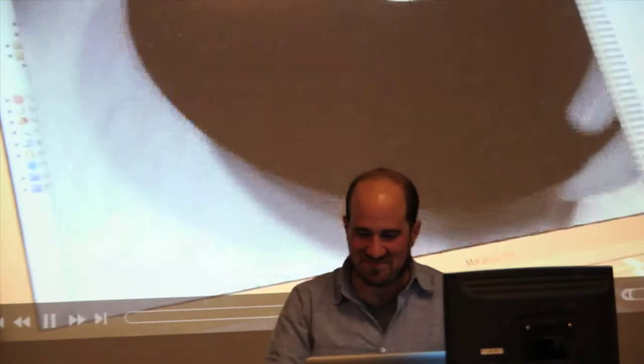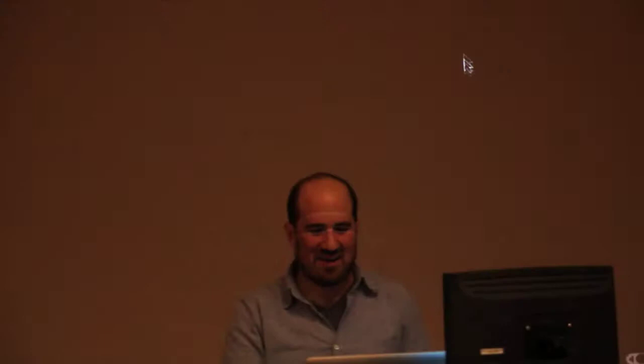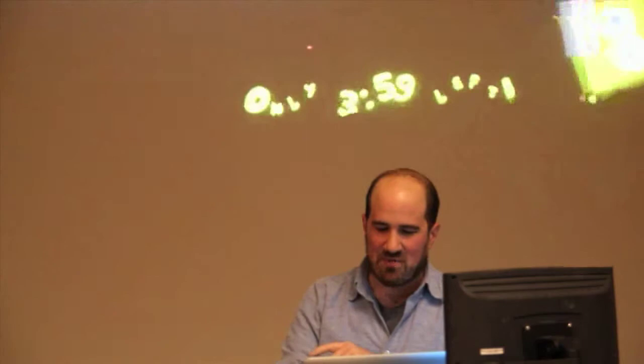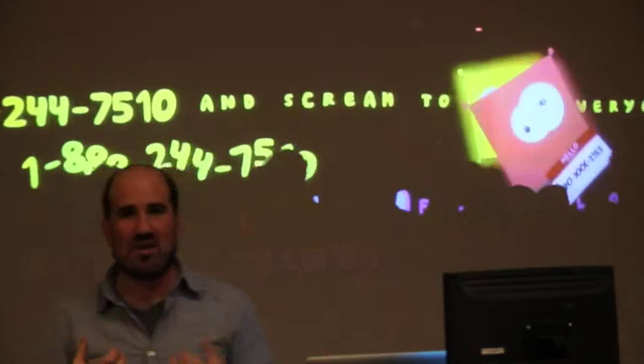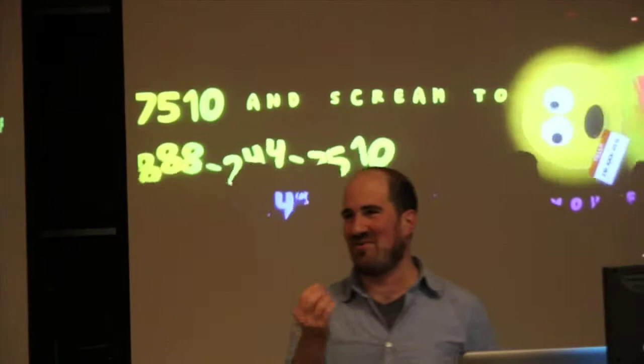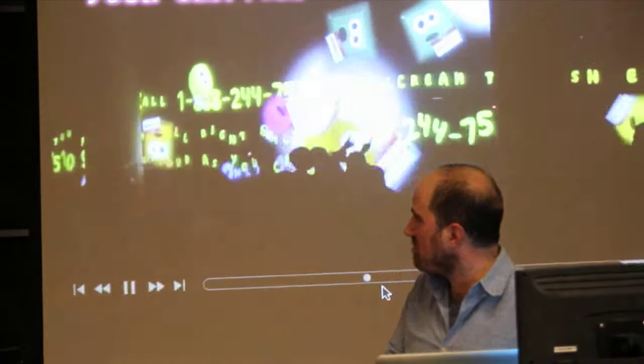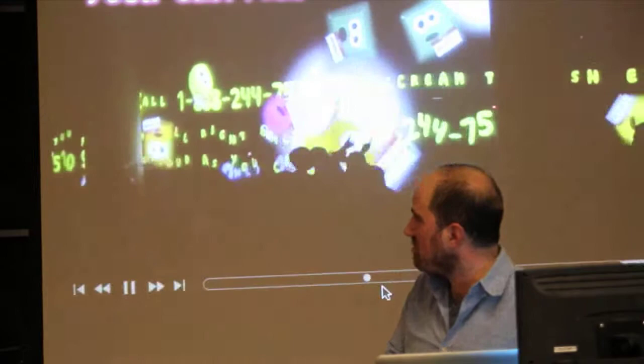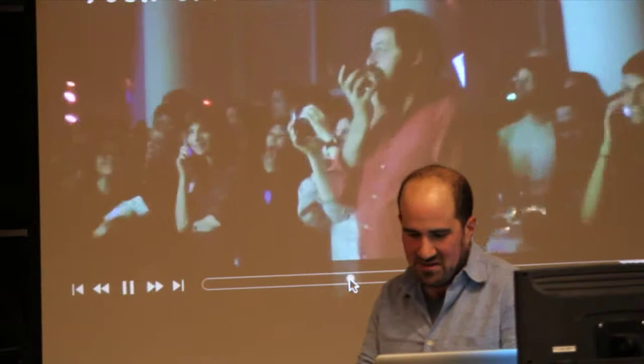This is a project by Todd Vanderlin called AR Vinyl. Todd will talk about his work — he's doing really amazing work in Boston. This is a project I love called Big Screams. In this project, you call in and you get a character — created by Eli, whose nickname is Prisoner John. He's also a collaborator for Open Frameworks. In this project, you call in, you get a character, and the louder you scream, the bigger your character gets. I love projects that encourage pandemonium.